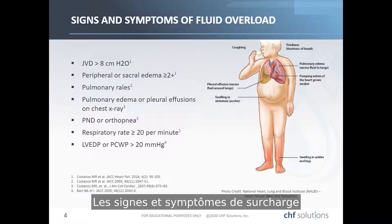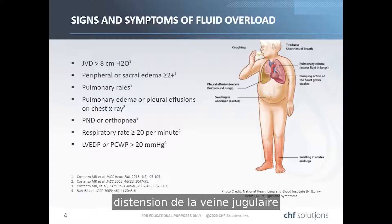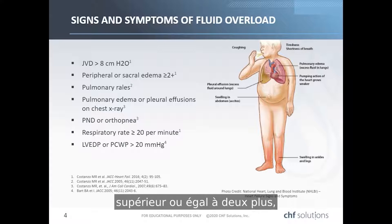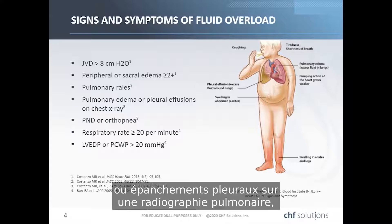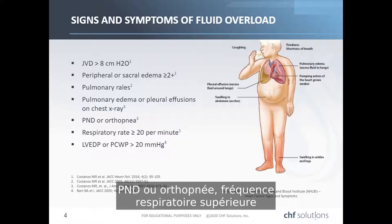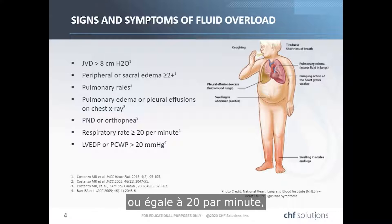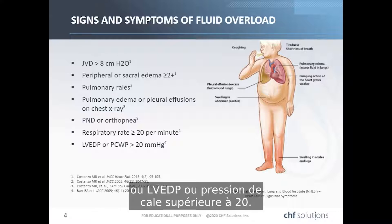Signs and symptoms of fluid overload include the following: jugular venous distension greater than 8 centimeters, peripheral or sacral edema greater than or equal to 2 plus, pulmonary RALs, pulmonary edema or pleural effusions on a chest x-ray, PND or apnea, respiratory rate greater than or equal to 20 per minute, or LVEDP or wedge pressure greater than 20.